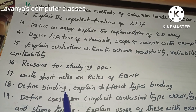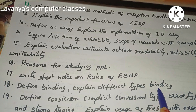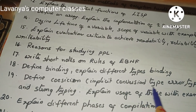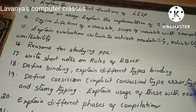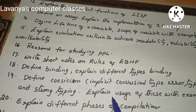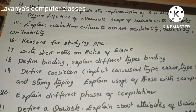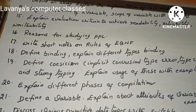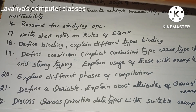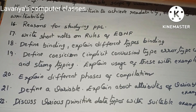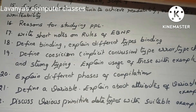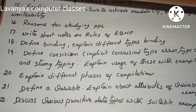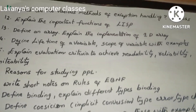Further questions: define binding and explain different types of binding; define cohesion, implicit conversion, type error, type checking, and strong typing — explain usage with examples; define a variable and explain attributes of variables with examples; and discuss various primitive data types with suitable examples.